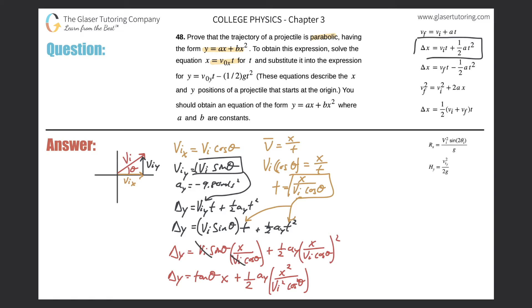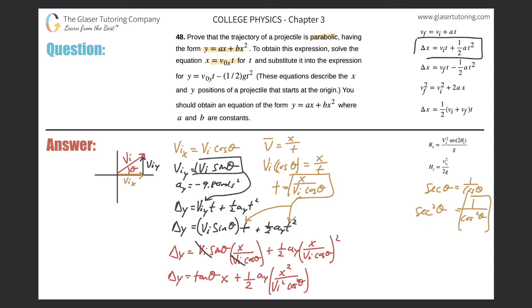We should express this using the same trigonometric function throughout. Recall that secant of theta is the same as 1 over cosine of theta. Therefore, 1 over cosine squared theta is the same as secant squared theta. Since we have cosine squared in the denominator, we substitute secant squared theta for 1 over cosine squared theta.